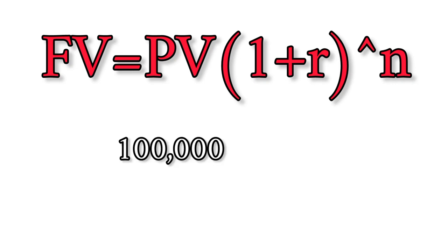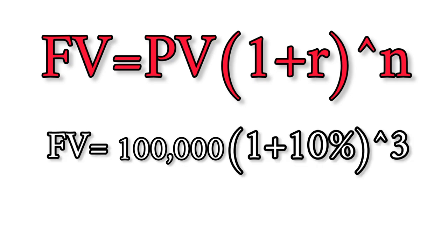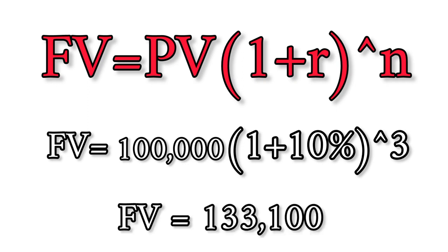So let's say your present value today is 100,000 naira. After three years, the future value is going to be: future value equals 100,000 times one plus 10 percent raised to the power of three. By the time you calculate this, you're going to get 133,100, not 130,000 that it should be normally.